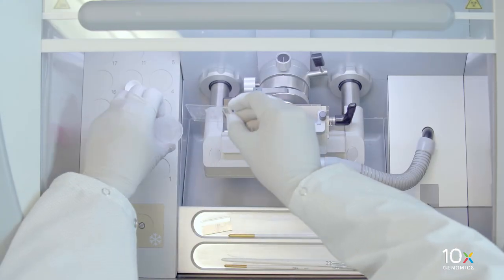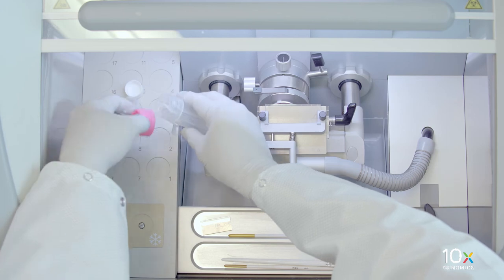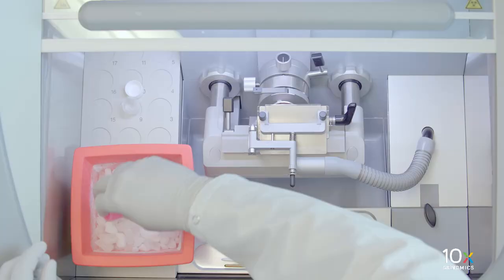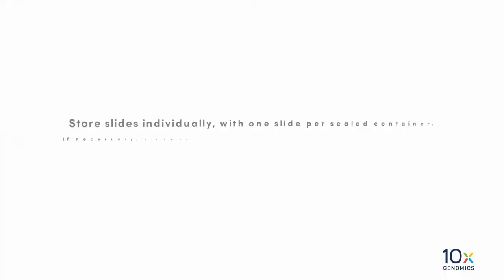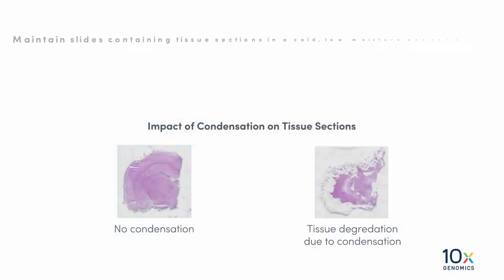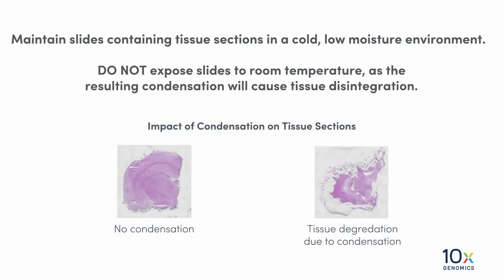Continue transferring sections on the remaining capture areas. Transfer the slide containing the tissue sections to a slide mailer. Seal and place in dry ice. If necessary, place the slides in a secondary container such as a resealable bag. Make sure to transport the tissue-containing slides on dry ice at all times. Maintain slides containing tissue sections in a cold, low moisture environment. Do not expose slides to room temperature, as the resulting condensation would cause tissue disintegration.